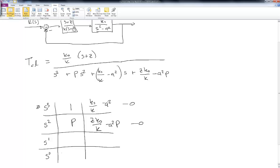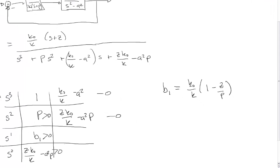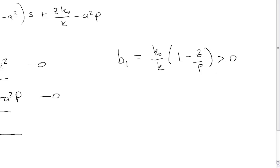So I need to calculate these. And we know from our previous discussion, this term here is just going to be Z times K-naught over K minus A squared times P. So I just have to calculate this term right here. And that term turns out to be, after a bit of work, K-naught over K times 1 minus Z over P. So the criterion, since this is a 1, what I need then is that P has to be greater than 0, B1 has to be greater than 0, and this guy has to be greater than 0.